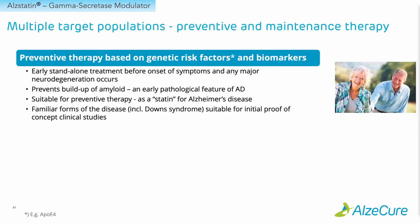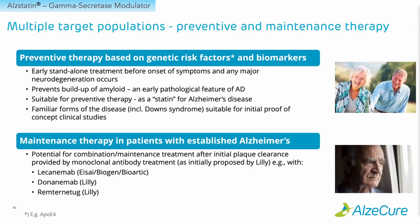Looking at target patient populations, we see two major groups. One is a preventive therapy where patients would be identified based on genetic risk factors and biomarkers — a standalone treatment before onset of symptoms and before any major neurodegeneration occurs, targeting prevention of amyloid buildup. This includes patients with inherited forms such as Down syndrome, which is suitable for proof-of-concept studies. There is also an opportunity for combination or maintenance treatment in patients with established Alzheimer's disease, after initial plaque clearance provided by antibody treatments such as lecanemab and donanemab.